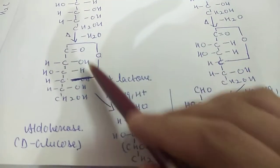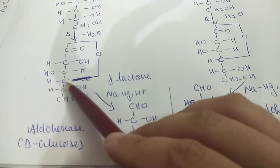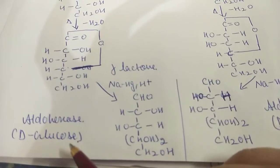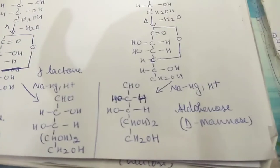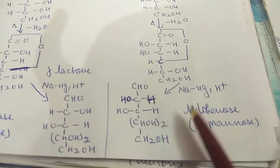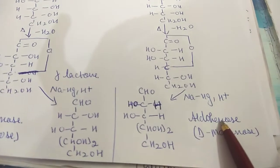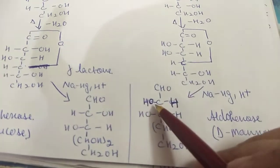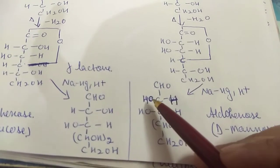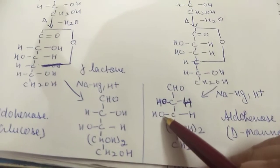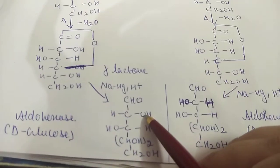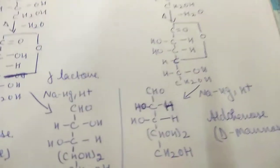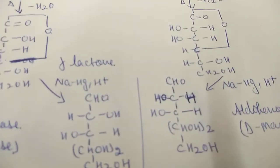The bridge between the carbons gets converted into a CHO group. On one side we get aldohexose, which is D-glucose, and on the other side we get another aldohexose, which is D-mannose. It is called mannose because the OH groups are both on the left side in one product, while in the other the OH is on the right side at carbon two and on the left side at carbon three — this is the only difference.